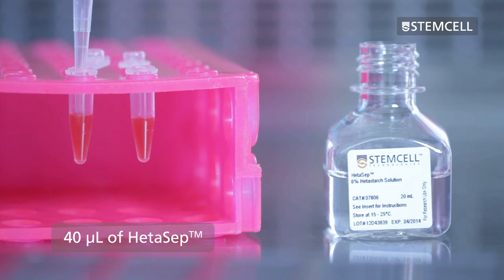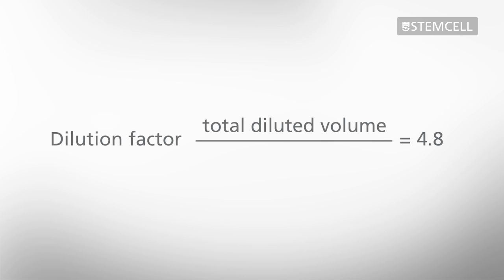Adding the reagents in this ratio will give you a dilution factor of 4.8. This is calculated by dividing the total diluted sample volume by the original sample volume.